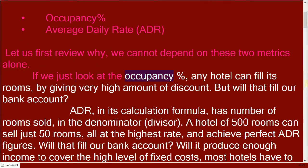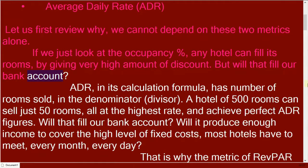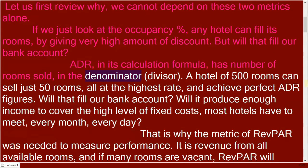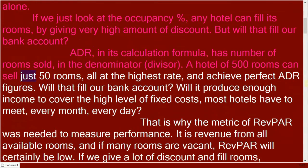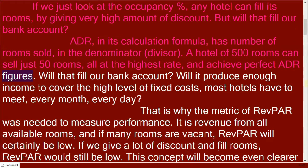If we just look at the occupancy percent, any hotel can fill its rooms by giving a very high amount of discount. But will that fill our bank account? ADR, in its calculation formula, has number of rooms sold in the denominator. A hotel of 500 rooms can sell just 50 rooms, all at the highest rate, and achieve perfect ADR figures. But will that fill our bank account?